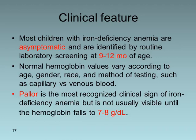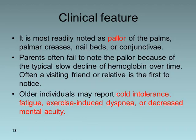Normal hemoglobin values vary according to age, gender, race, and testing method — whether capillary or venous. The most important clinical sign is pallor, but it is not usually visible until hemoglobin reaches 7 to 8 g/dL. Parents often fail to notice pallor because they live with the child, but it can be detected by visiting friends, relatives, or doctors. Older children may report cold intolerance, fatigue, exercise-induced dyspnea, or decreased mental acuity.